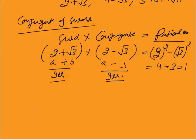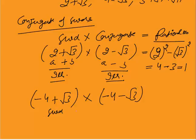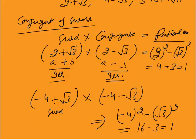Another example: let's say minus 4 plus root 3. This is a surd. What should be the conjugate? The conjugate would be minus 4 minus root 3, again in the form of a plus b or a minus root b. The product is a plus b into a minus b, which equals minus 4 squared minus root 3 squared. You get 16 minus 3, and the answer is 13. That is the meaning of a conjugate.